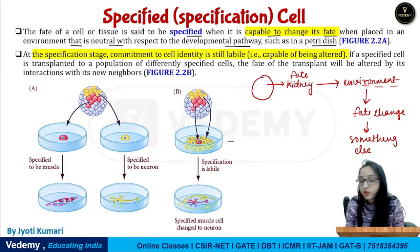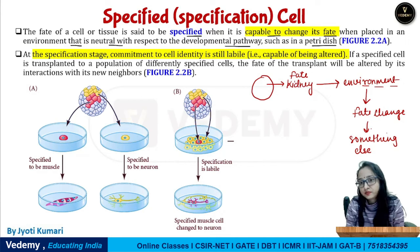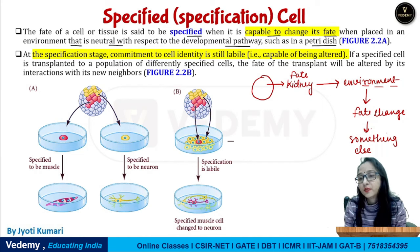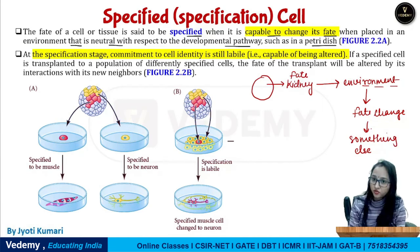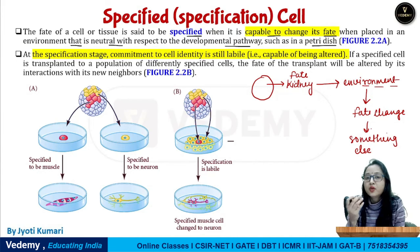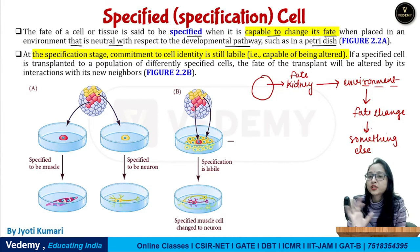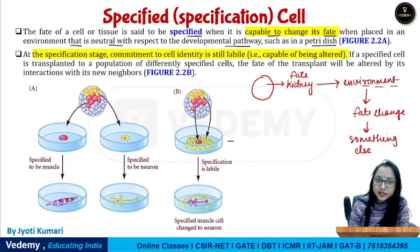Neutral means an environment that will not add any influence to the cell — it will just provide support. So at the specification stage, commitment to cell identity is still labile.